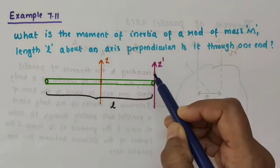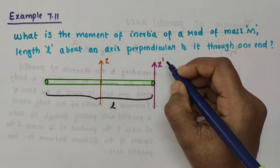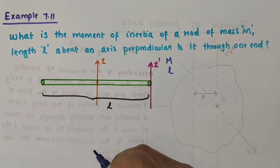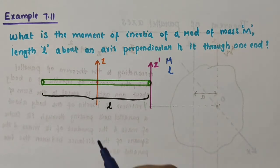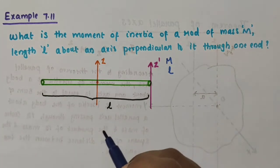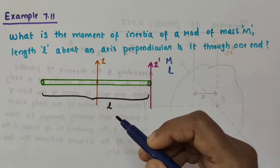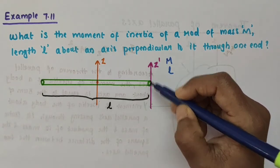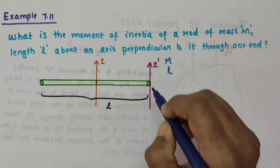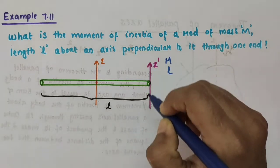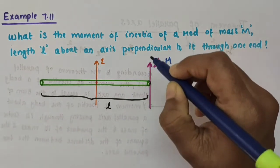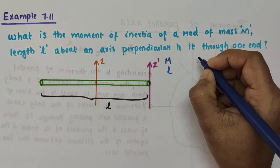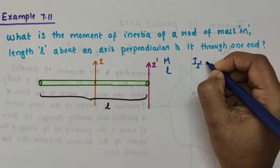Consider a rod — this green colored one — of mass M and length l. We want to find out the moment of inertia of this rod about an axis perpendicular to the rod and passing through one end. Let z-dash be that axis. So z-dash is the axis passing through one end of the rod and perpendicular to it. We want to find out I_z-dash.